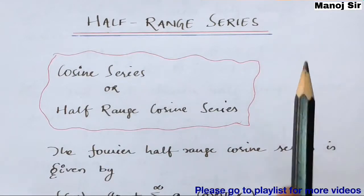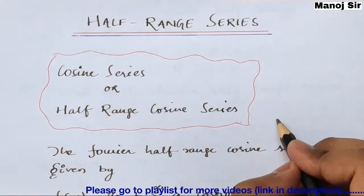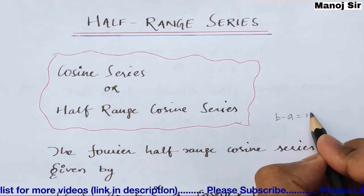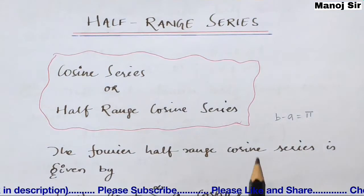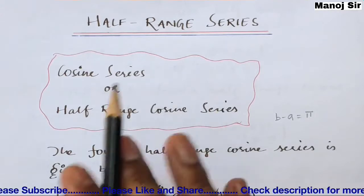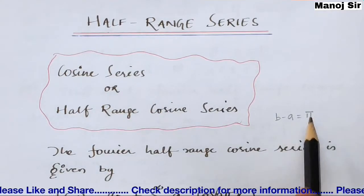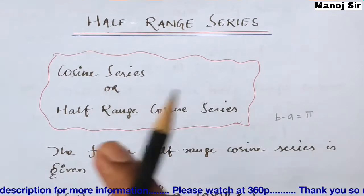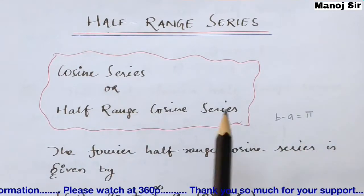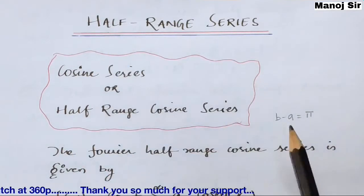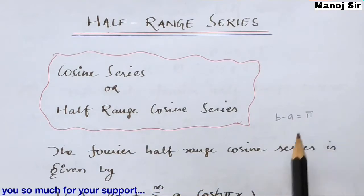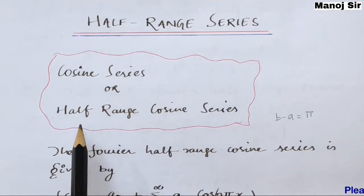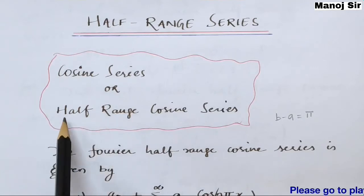In half range series, the value of B minus A must be half. Previously, we saw that for a full range series B minus A equals 2π. But here, in the half range series, the value of B minus A will come out to be π.